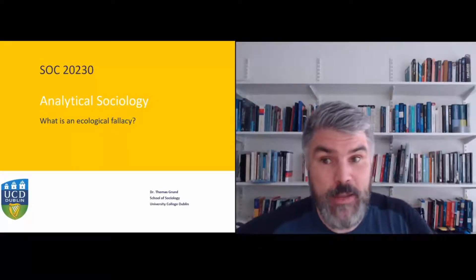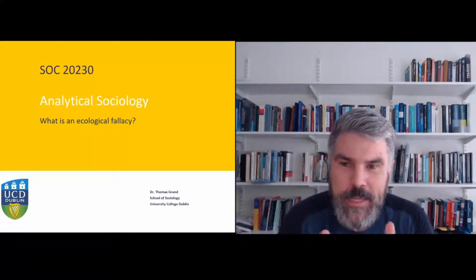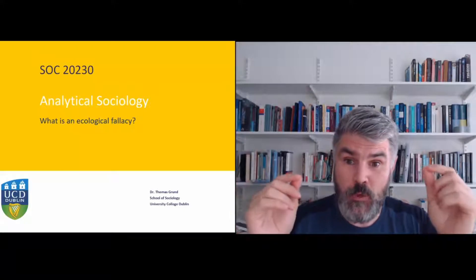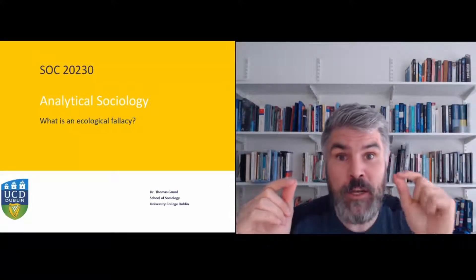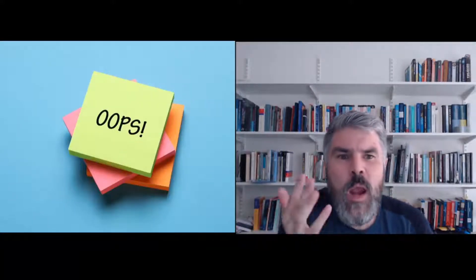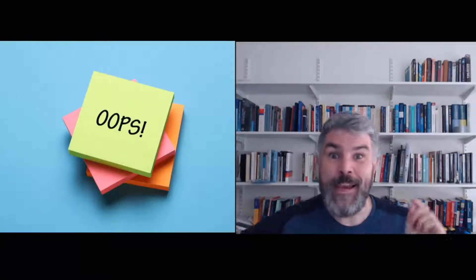So what is an ecological fallacy? An ecological fallacy is basically when we have information about a group of people and we use that information to draw a conclusion about an individual who happens to be in that group. In sociology, we can study things at different levels - we can look at the society, we can look at nations, we can look at cultures, we can look at individuals, and these are all different levels of analysis. And an ecological fallacy is when we mix these levels up.